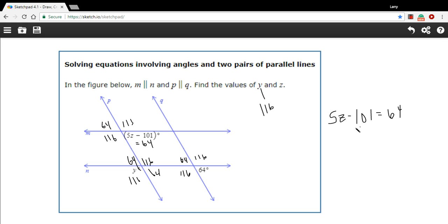To solve for z, we need to get rid of this 101. So let's add that to both sides. And we get 5z equals 165. And we need to divide by 5. And let's see, what is that? Is that 33?